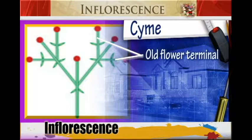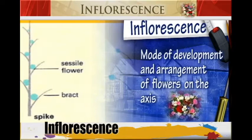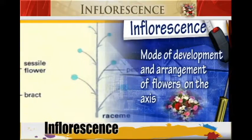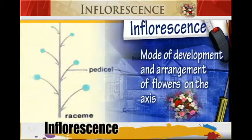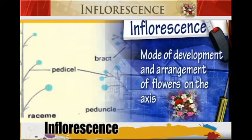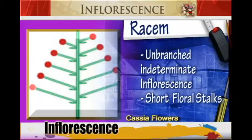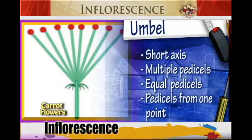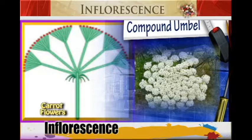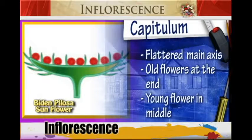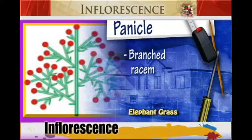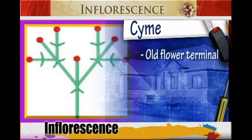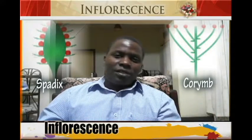So we have looked at the inflorescence, which is the arrangement and development of the flowers on the axis. We have seen the Raceme inflorescence, Corymb inflorescence, Umbel inflorescence, Compound Umbel inflorescence, Capitulum inflorescence, Panicle inflorescence, and Cyme inflorescence. Next time when we come, we shall look at the types of flowers. Thank you.